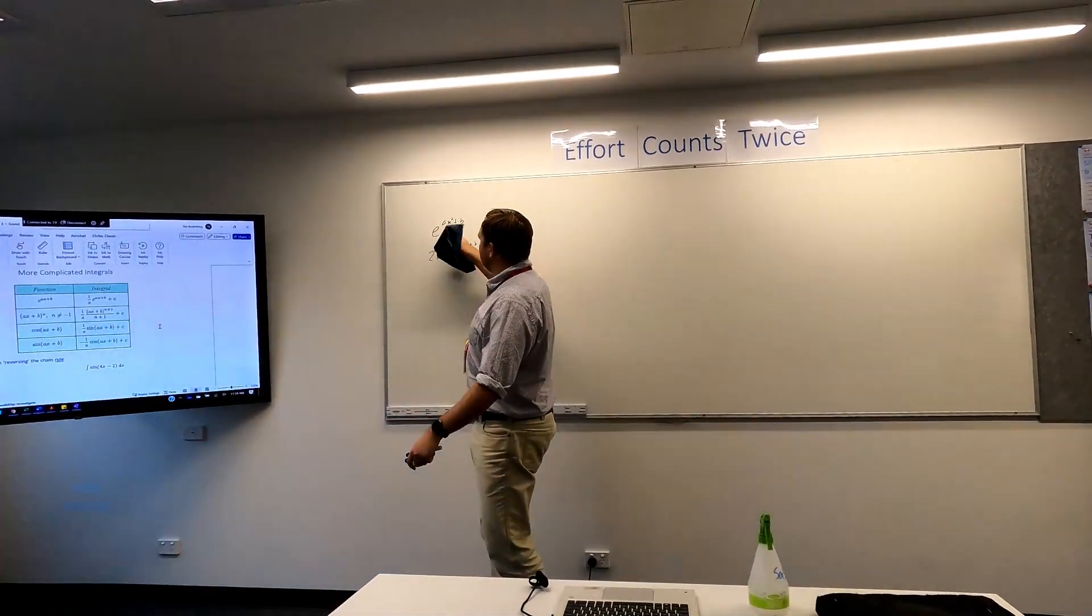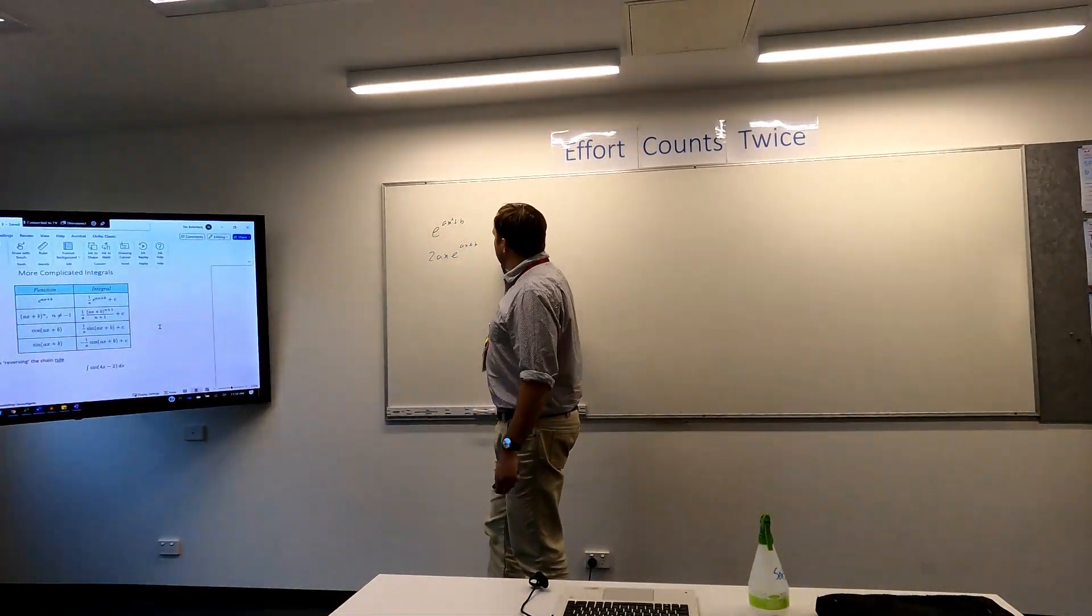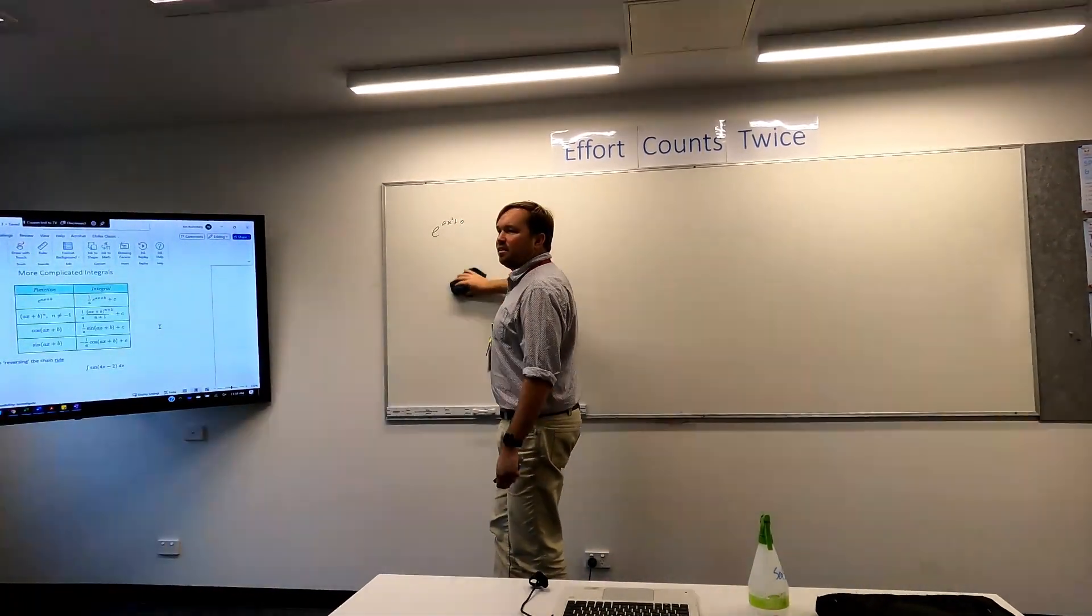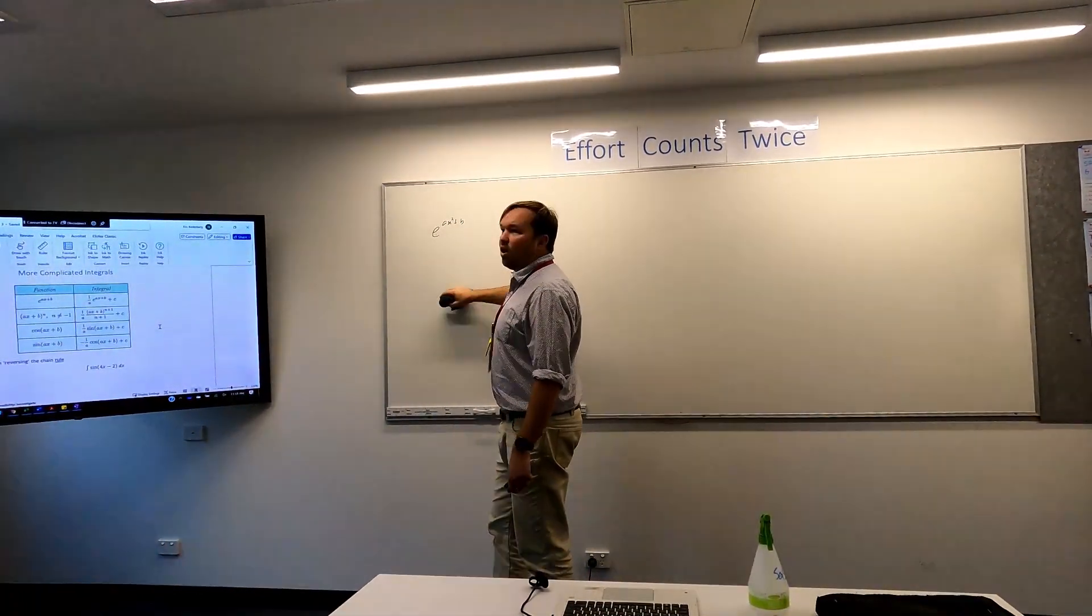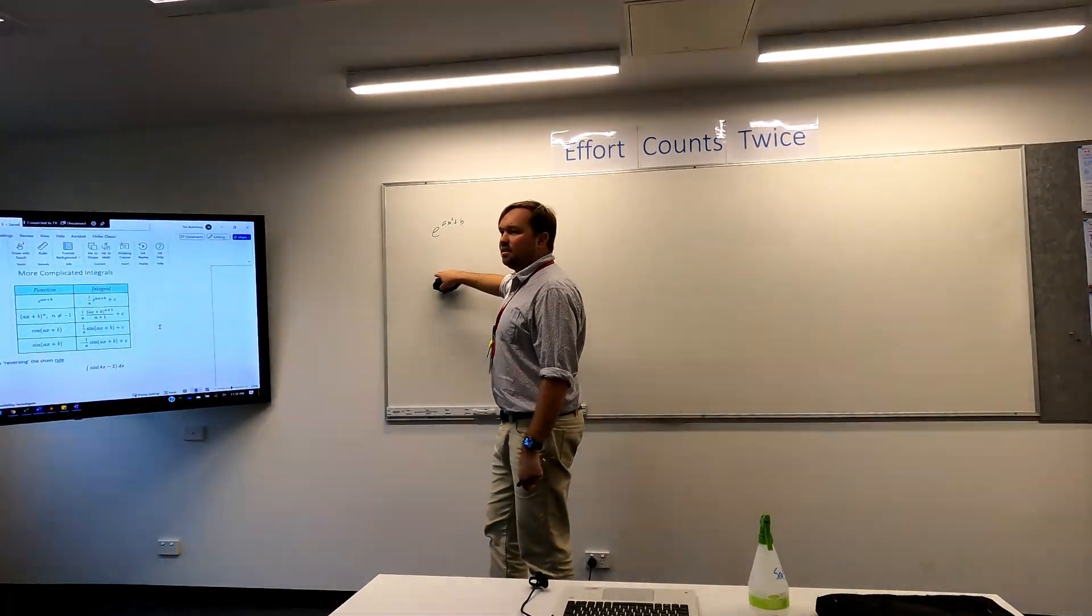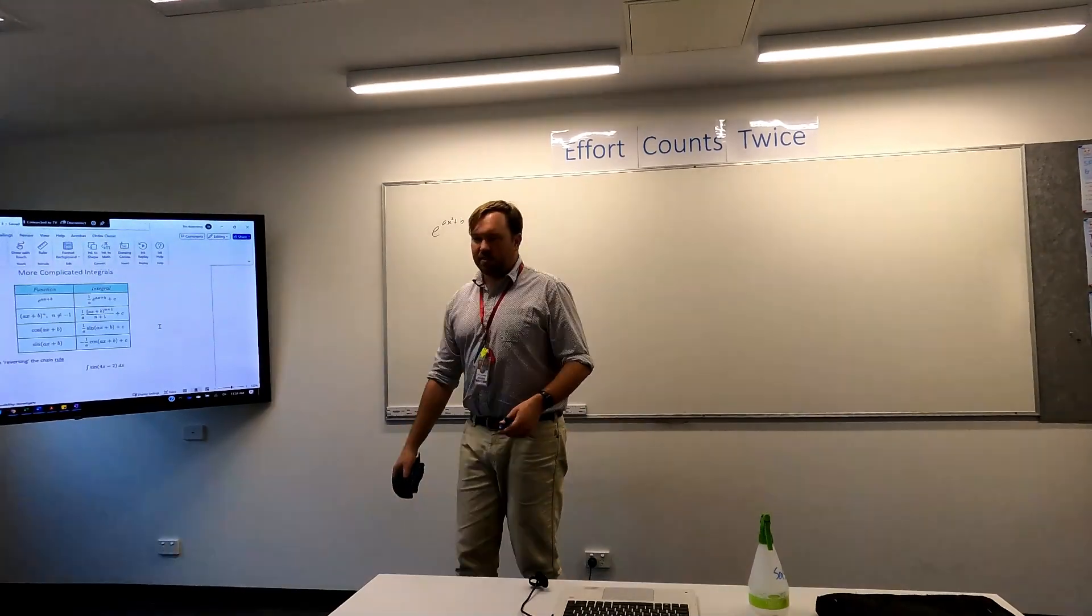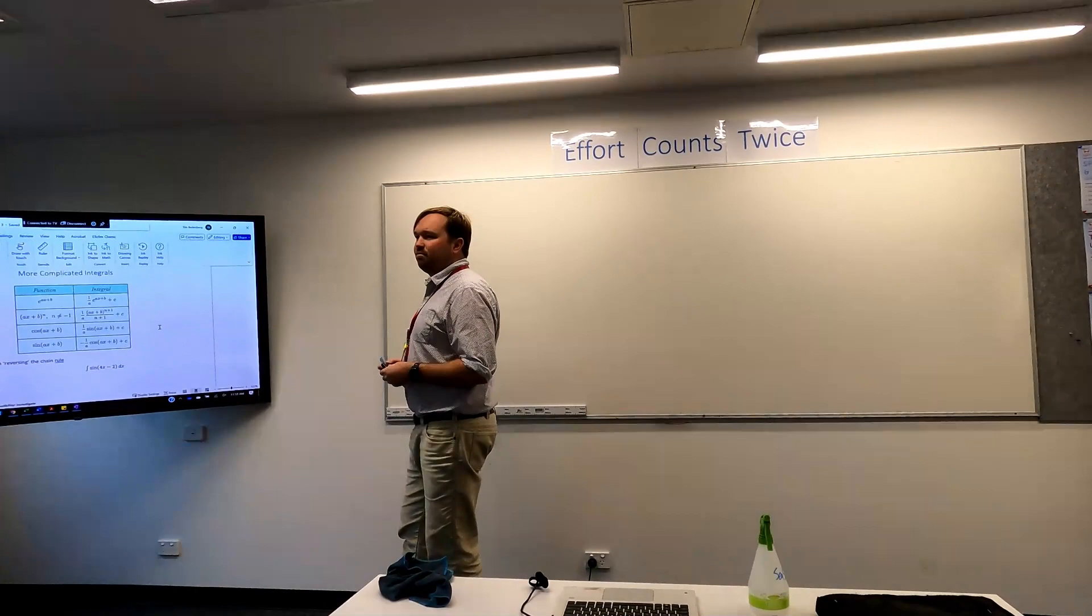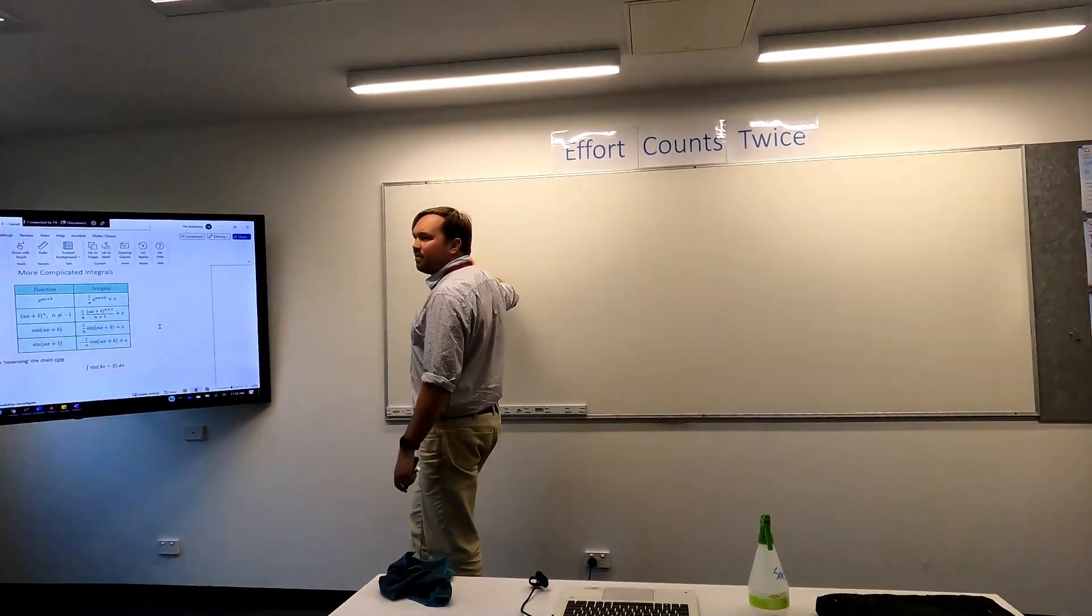So with that one there, would it be e to the ax squared plus b, or would you take the... As in if we were going to integrate this? No, I mean the one you just derived. Oh, if we were going to integrate that. No, you derived that and you derived it to the term, 2ax e to the ax squared plus b. It should be squared. Yeah, it should be squared. Okay.